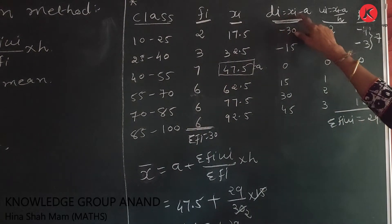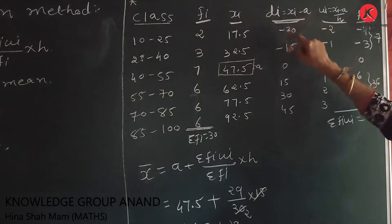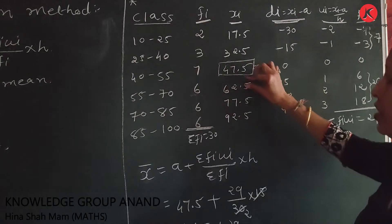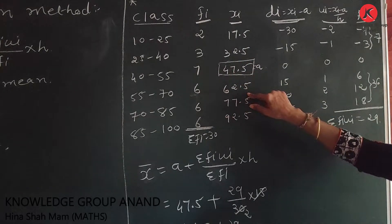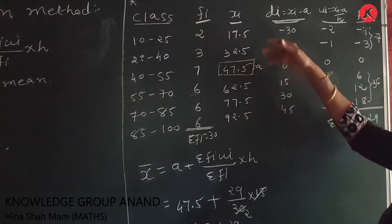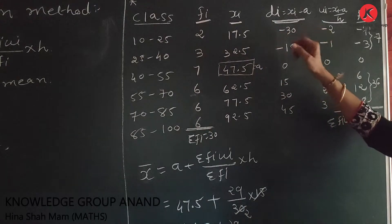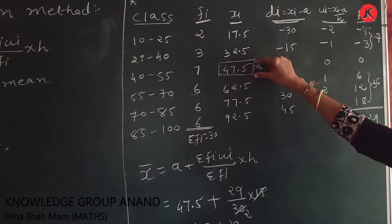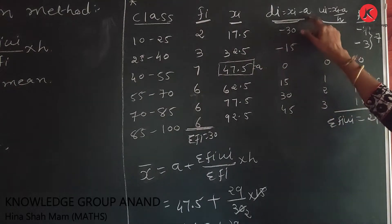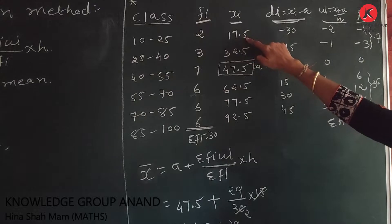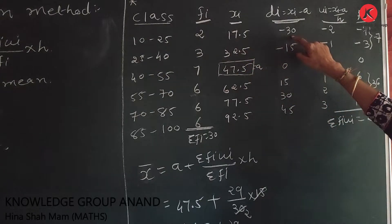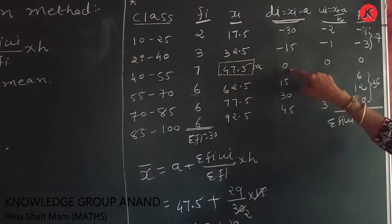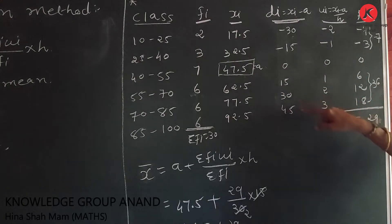di = xi - a. We assume a = 47.5. So di values are: 17.5 - 47.5 = -30, then -15, 0, 15, 30, and 45.